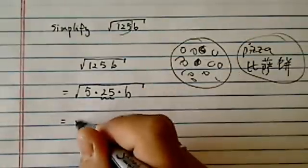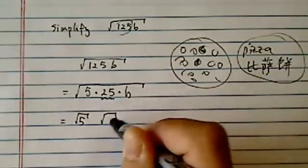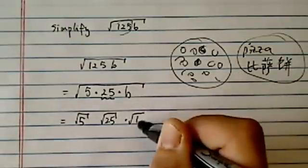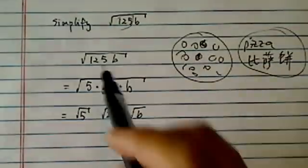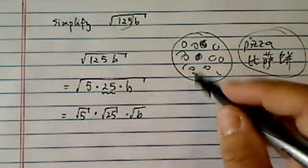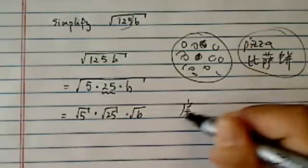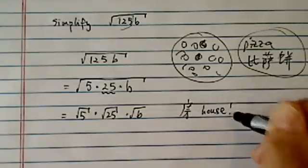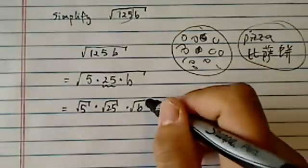And I'm going to take each one of them apart because when you're doing multiplication and radical, you can actually split them up. So each one of them have their own house. That's how we write house. Okay, they carry their own house here.